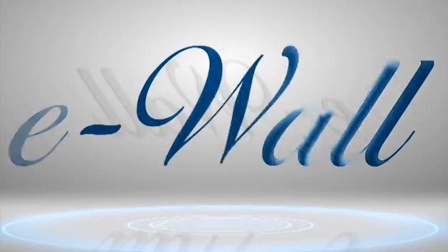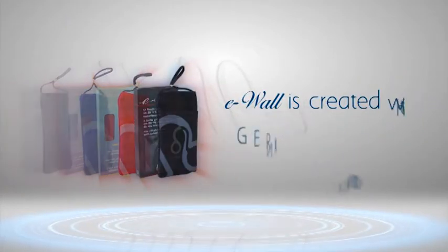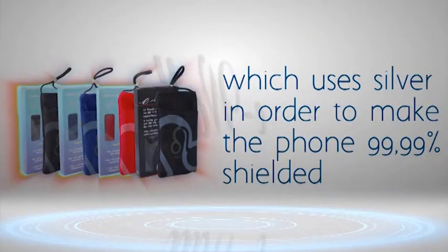The solution is a revolutionary invention. E-Wall is created with German nanotechnology which uses silver in order to make the phone 99.99% shielded.